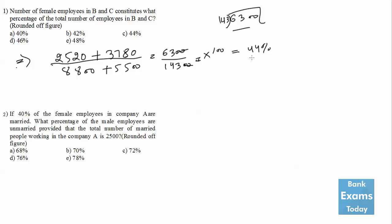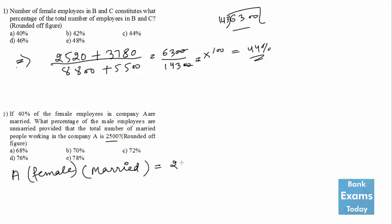44% is the answer to question 1. Question 2: if 40% of the female employees in company A are married, what percentage of male employees are unmarried, given that the total number of married people working in company A is 2500? In company A there are 2100 females total. 40% of them are married, so 40% × 2100 = 840 married females.